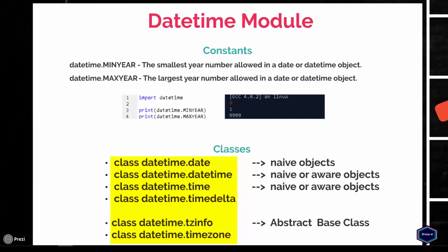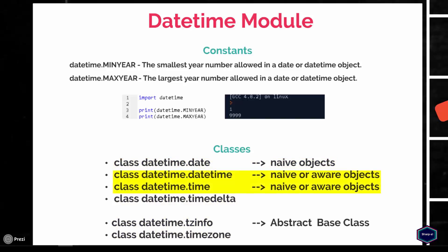In the datetime module, there are two different kinds of date and time objects: naive and aware. The aware objects contain timezone and daylight saving time information, whereas a naive object has no such information. Objects of class date are always naive objects, whereas objects of the time and datetime classes may be naive or aware. The distinction between naive and aware objects doesn't apply to timedelta objects.